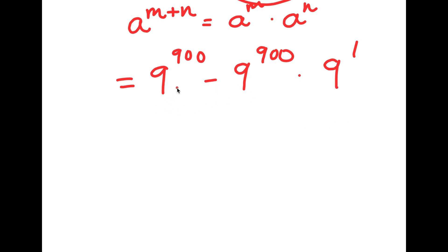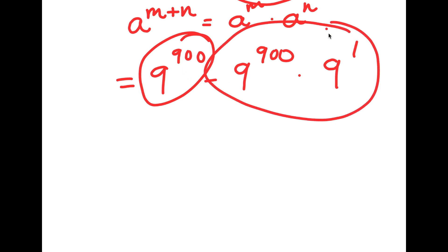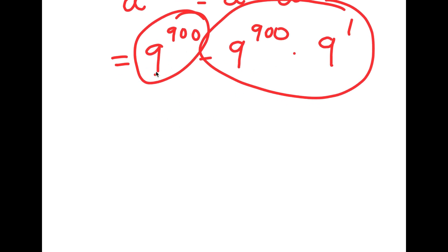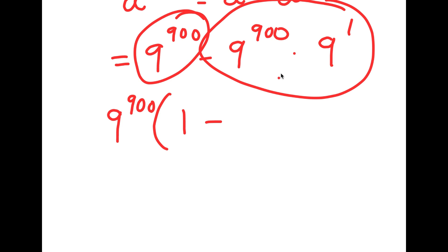Now, from here, notice how we have two terms. Our first term is 9 to the power of 900, and our second term is 9 to the power of 900 times 9 to the power of 1. Because both of our terms have 9 to the power of 900 in them, we can factor that out. So we factor 9 to the power of 900, and we get 9 to the power of 900 times — 9^900 divided by 9^900 is 1, minus 9^900 times 9^1 divided by 9^900, which is simply 9 to the power of 1.